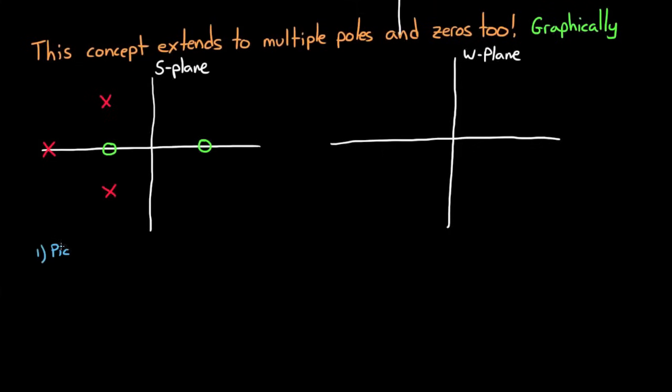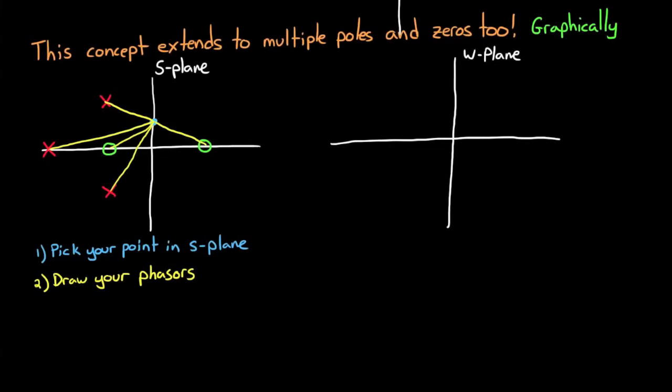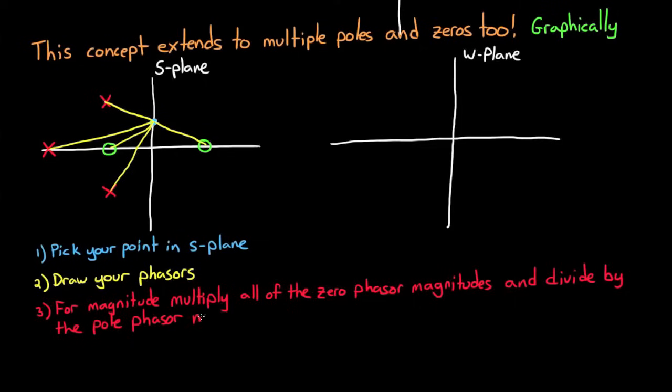Step 1 is to pick the point in the s-plane that you want to map over to the w-plane. Step 2 is to draw the phasors from each of the poles and zeros to that point. Step 3 is to determine the magnitude, or the length of the phasor, by multiplying all of the zero phasor magnitudes and dividing out all of the pole phasor magnitudes. This resulting magnitude sets the length of the phasor in the w-plane.